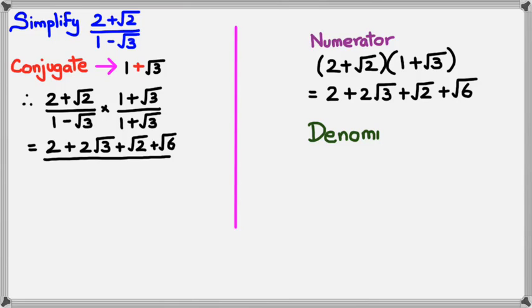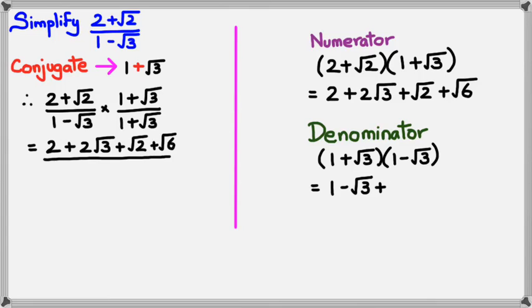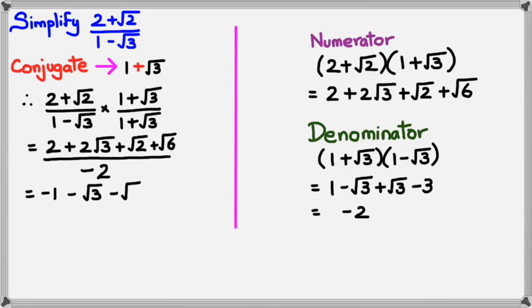Now I'll work out the denominator. I have (1 plus root 3) times (1 minus root 3). Expanding as a quadratic I get 1 minus root 3 plus root 3 minus square root of 3 times square root of 3, which is minus 3. Simplifying, this gives negative 2. So the denominator is negative 2. I could leave the answer as is since it's rationalized, but I'll simplify it to: negative (1 plus root 3 plus root 2) divided by 2, written as negative 1 minus root 3 minus root 2, all over 2.